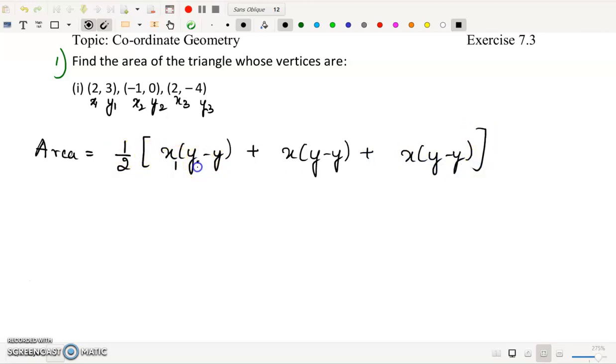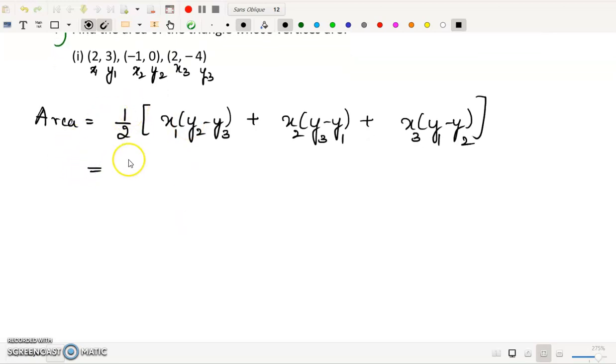So it will be 1, 2, 3, 2, 3, 1 and 3, 1, 2. So this is the formula. So here we will substitute the values.